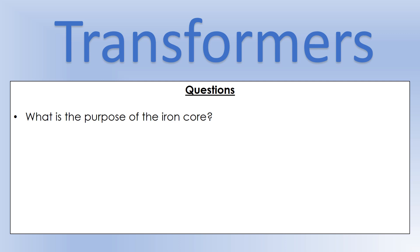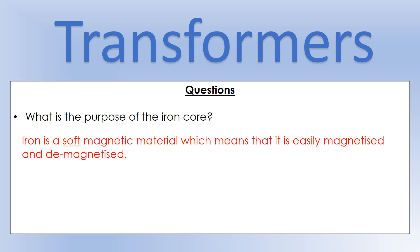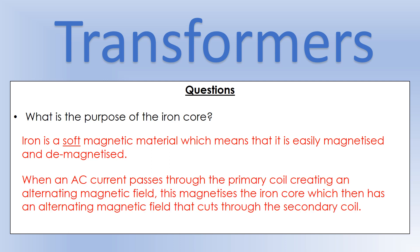Why is there an iron core? You can do this across an air gap — two coils next to each other will work — but the iron core is there to strengthen the magnetic field and therefore strengthen the field interacting with the secondary coil. Iron is used because it's a soft magnetic material, meaning it's very easy to magnetize and demagnetize. When you pass AC through the primary coil it creates an alternating magnetic field, the iron core becomes an alternating magnet, and that field cuts through the secondary coil.